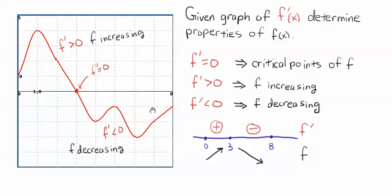Okay, so from zero to three, f prime is greater than zero. It's positive. And from three to eight, f prime is negative.